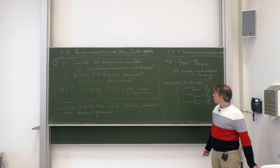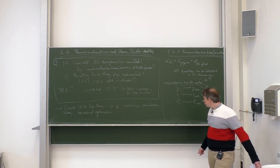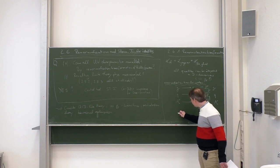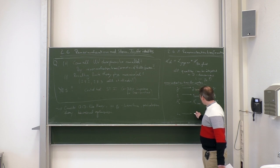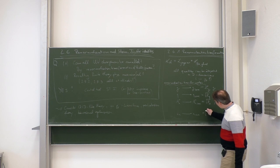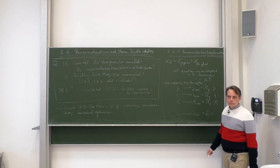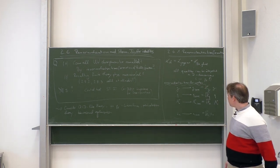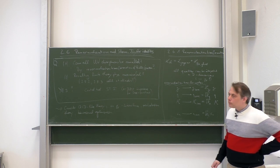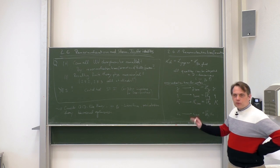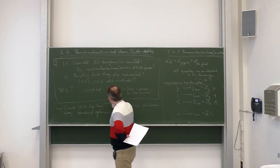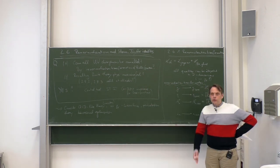Under this renormalization transformation, the Lagrangian L_cl becomes L_bare, which we split into L_cl plus a counterterm Lagrangian L_CT. If we write all Z_i = 1 + δZ_i, then the counterterm depends on all these δZ_i. The renormalization transformation changes our Lagrangian to the original term plus new terms with δZ-factors, and we can adjust these to cancel divergencies.